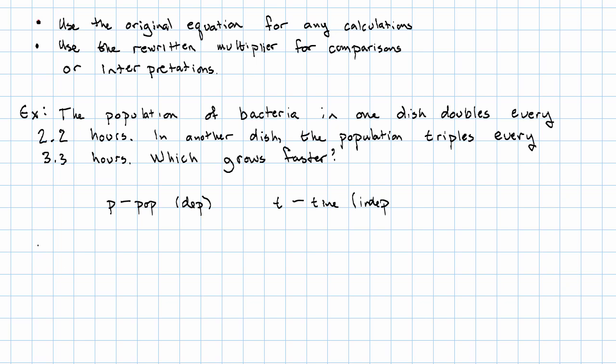In the first dish, the population equals... It doesn't tell us what the starting population is. It's just something... times two to the power. We multiply by two every time two point two hours pass.